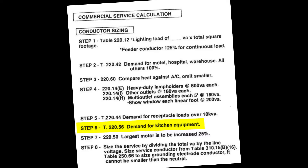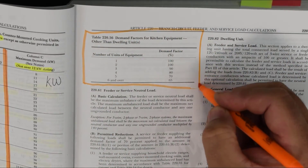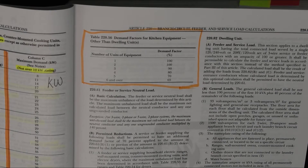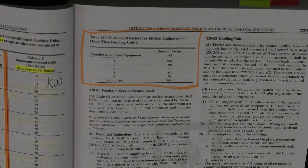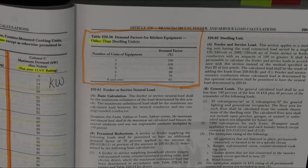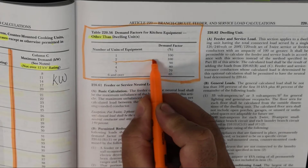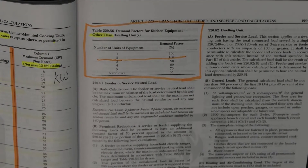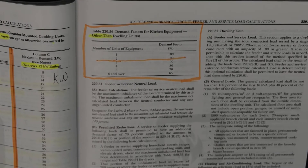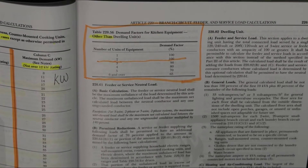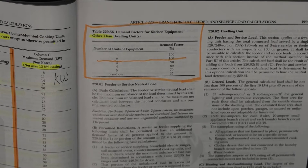Step 6 takes us to 220.56 and its table, covering demand for commercial kitchen equipment — specific only to commercial kitchens, not dwelling units. You add up the nameplates of all the different pieces of kitchen equipment. Once you get past two pieces of equipment, you start taking a discount. At six or more pieces of equipment, it's a 65% demand factor. This reflects the practical reality that in a commercial kitchen with 10 different pieces of equipment, you probably won't be using all of them simultaneously at full load capacity.